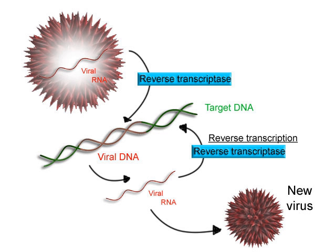A DNA transcription unit encoding for a protein may contain both a coding sequence, which will be translated into the protein, and regulatory sequences, which direct and regulate the synthesis of that protein. The regulatory sequence before (upstream from) the coding sequence is called the 5' untranslated region (5' UTR), and the sequence after (downstream from) the coding sequence is called the 3' untranslated region (3' UTR). As opposed to DNA replication, transcription results in an RNA-DNA complement that includes the nucleotide uracil in all instances where thymine would have occurred in a DNA complement.